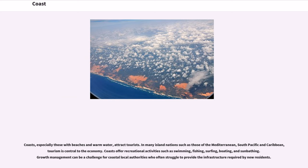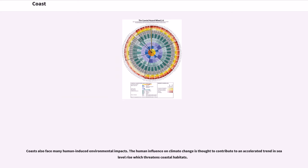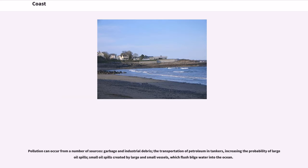Growth management can be a challenge for coastal local authorities who often struggle to provide the infrastructure required by new residents. Coasts also face many human-induced environmental impacts. The human influence on climate change is thought to contribute to an accelerated trend in sea level rise which threatens coastal habitats. Pollution can occur from a number of sources: garbage and industrial debris, the transportation of petroleum and tankers increasing the probability of large oil spills, and small oil spills created by vessels which flush bilge water into the ocean.